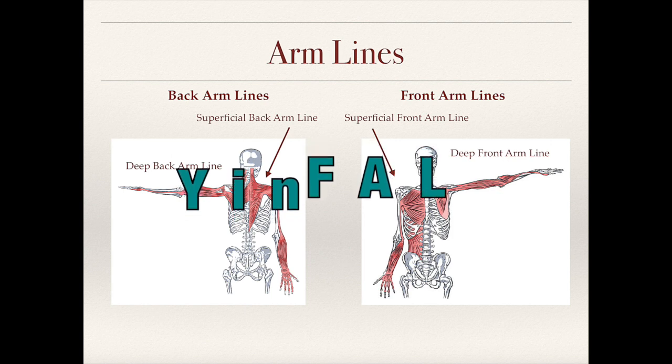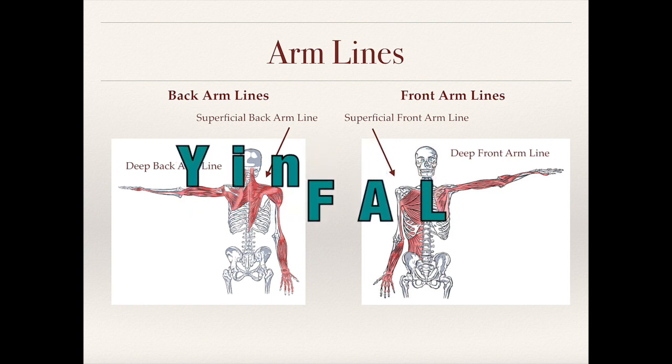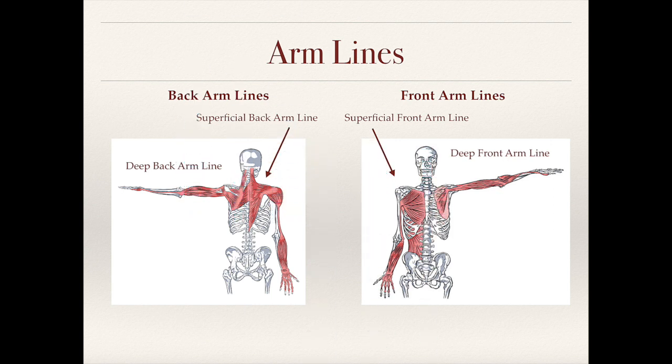The arm yin channels are on the front arm lines, as we see in the image on the right. We can see how the arm yin meridians connect to the pecs, the lats, and the biceps.